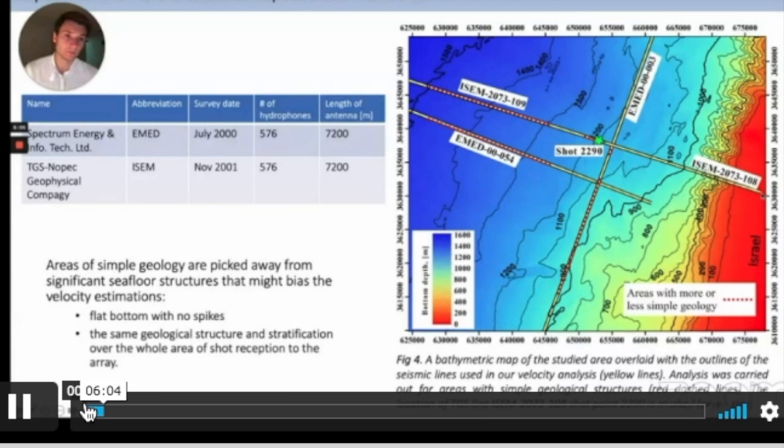which starts here near the shore of Israel and goes to the depth of about 1300 meters. Also, we have chosen areas of more or less simple geology in order to avoid biasing of the velocity estimations. We picked areas where the bottom is as flat as possible with no significant spikes in the bathymetry. And also, there is the same geological structure under the area of reflection of the shot.